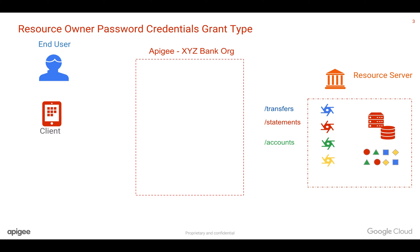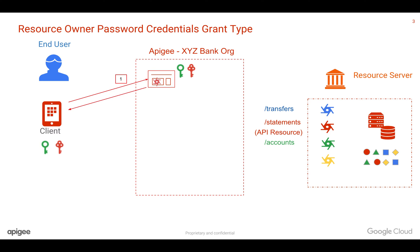Apigee can sit in between the client and the backend resource server and act like an OAuth authorization server. In the first step, the client registers itself with the Apigee Edge developer portal and tries to access a particular API resource. Apigee Edge generates a key and secret and gives them back to the client.